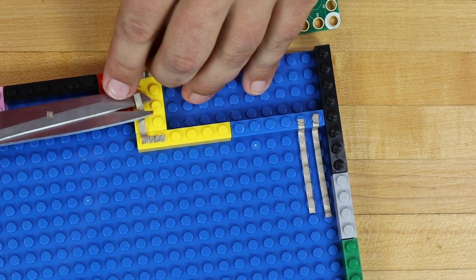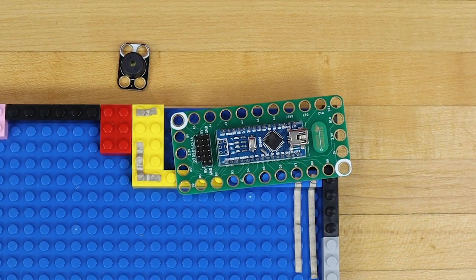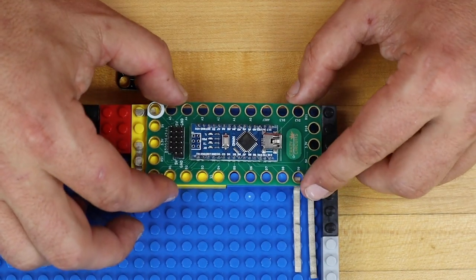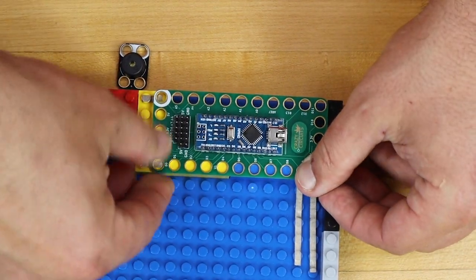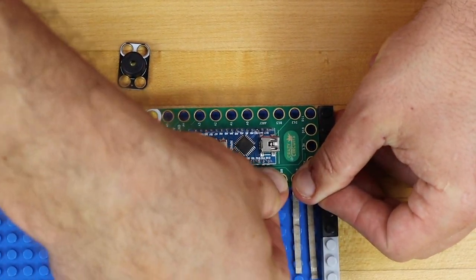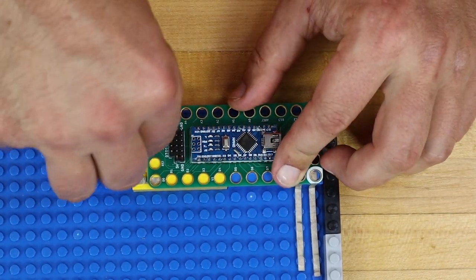Stick down some conductive tape for the piezo speaker. We'll use pin zero and ground on the robotics board. With the conductive tape in place, we'll snap the robotics board and piezo speaker over the top of the tape.